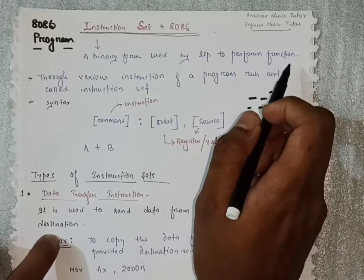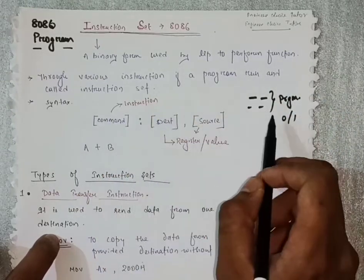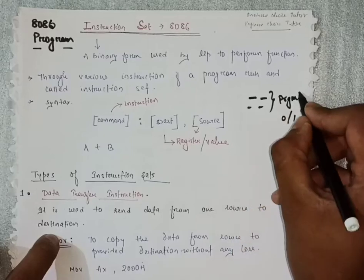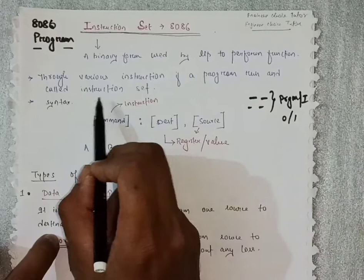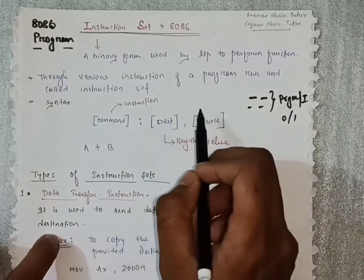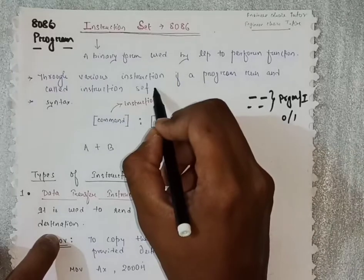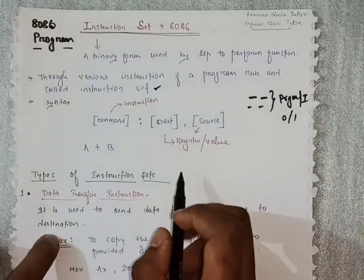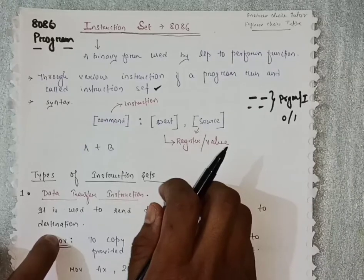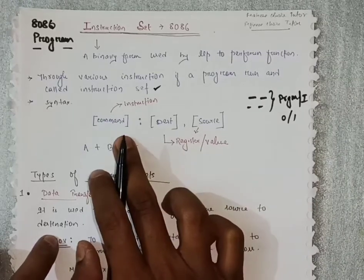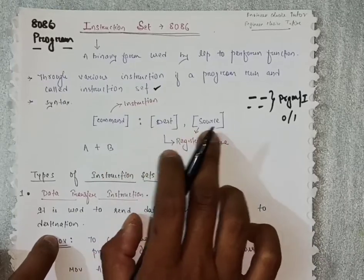They perform some functions through various instruction sets. The combination of instructions is known as an instruction set or program. We'll go through the syntax — how this instruction set is written. There will be some command, after that a colon, then destination and source.